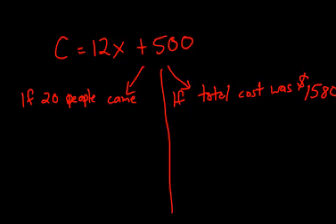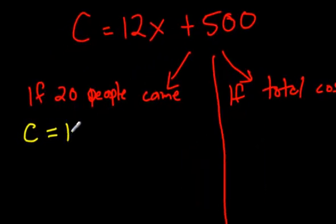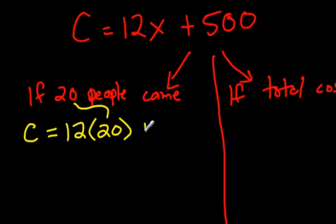So let's move on to the next question. Let's say you want to rent a hall for a party and the hall costs 500 bucks no matter what, but the hall also charges $12 per person to rent it. What happens if 20 people came? Well, C is the cost, X is how many people are coming. So if 20 people came, where would you put the 20? You put the 20 right where you see the X. So C is equal to 12 times 20, plus 500.